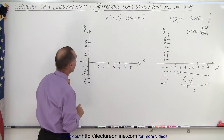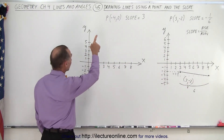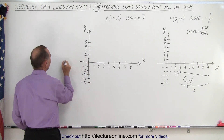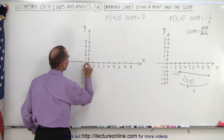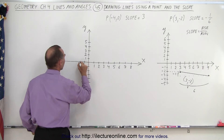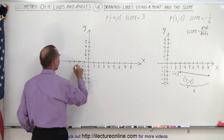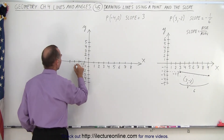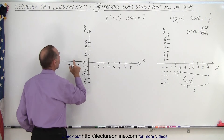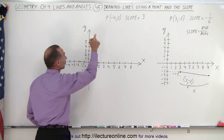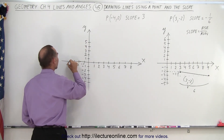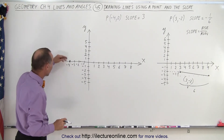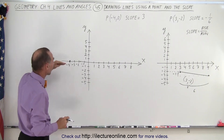Here's our second example. We find the point (negative 4, 0). So negative 4 in the x direction — negative 1, negative 2, negative 3, negative 4 — and 0 for the y. That means that puts me right over there: negative 4 for the x and 0 for the y direction.